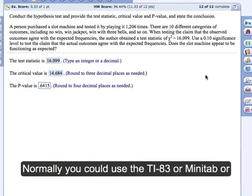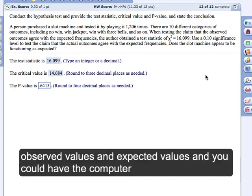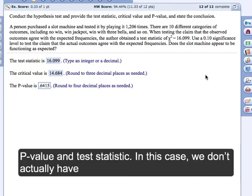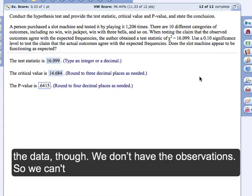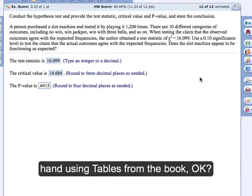Normally you could use the TI-83, or you could use Minitab, or you could use StatDisk, or Excel, and you would be entering observed values and expected values, and you could have the computer use that data to compute out the critical value and the p-value and the test statistic. In this case, we don't actually have the data, though. We don't have the observation. So we can't really do it that way.